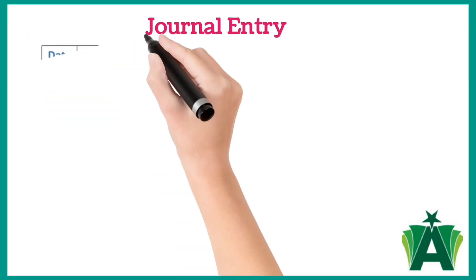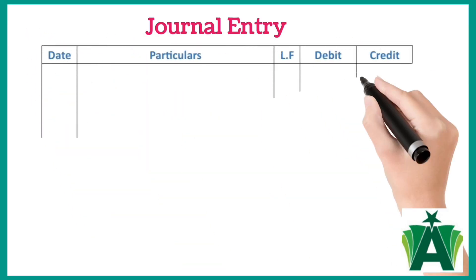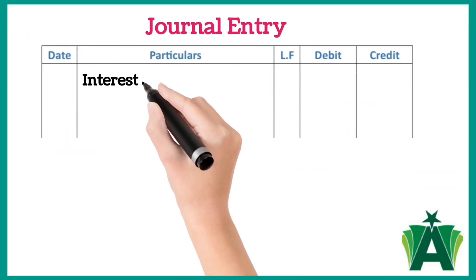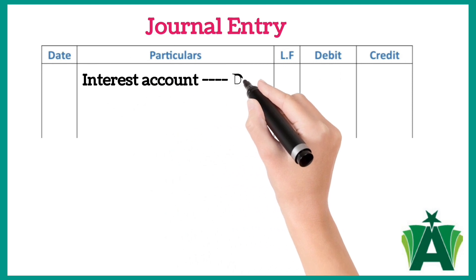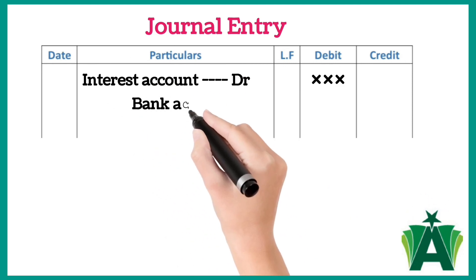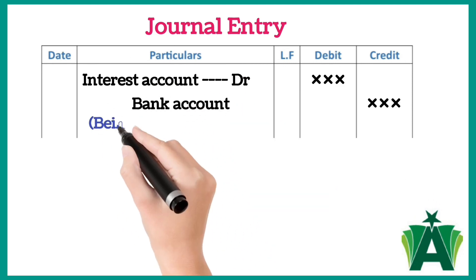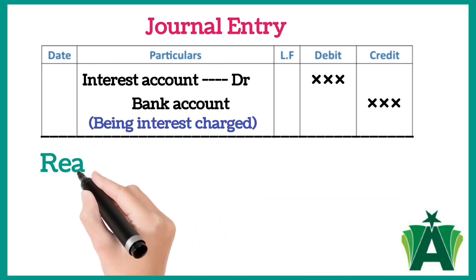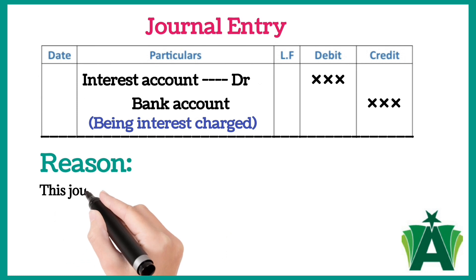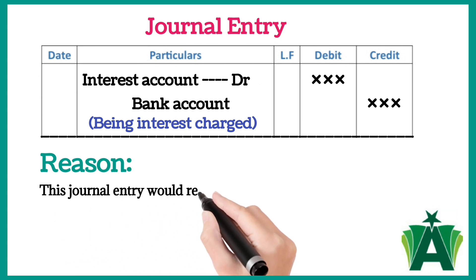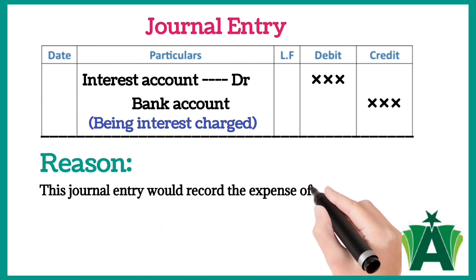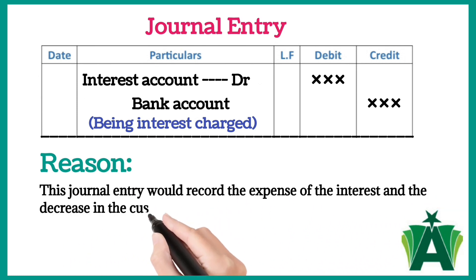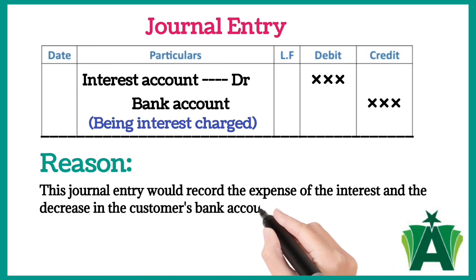Journal entry for interest charged by the bank: bank interest account debit, bank account credit, being interest charged. Reason: this journal entry records the expense of the interest and the decrease in the customer's bank account balance.